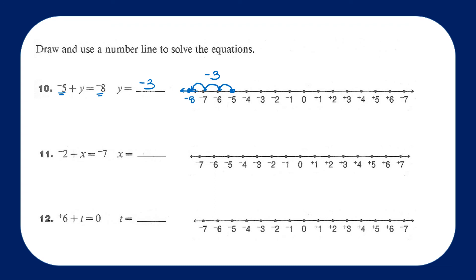Question number 11: we're starting at negative 2 and we want to get to negative 11. So we're going from negative 2 to negative 11. I have to go to the left 1, 2, 3, 4, 5 spaces, and I'm decreasing my number — so that's negative 5. Negative 2 plus negative 5 equals negative 7.